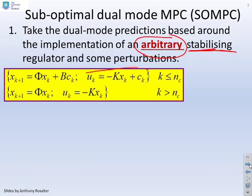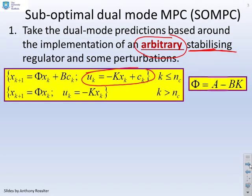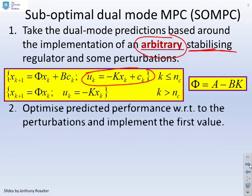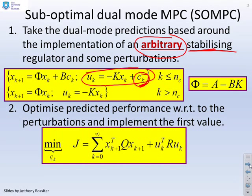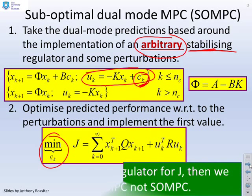You'll notice in mode 1, our predictions have the form U equals minus KX plus C, and in the terminal mode, U equals minus KX. We're going to optimise the predicted performance with respect to these perturbations C and implement the first value. There's our performance index. We minimise it with respect to these values C.